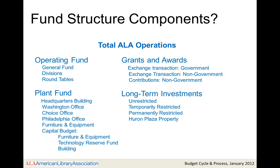With regards to ALA's fund structure components, these funds make up our total ALA operation. The revenue and expenses in these areas make up who we are financially. The Operating Fund is where we carry out the mission of the Association. The Plant Fund is for the physical locations of where we do business. Grants and awards also support the Association's mission and programmatic priorities. The Long-Term Investments, also known as the Endowment Fund, support initiatives or special interests of the Association, a division, or a roundtable.